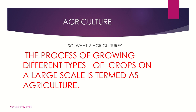So what is agriculture? The process of growing different types of crops on a large scale is termed as agriculture. This basically means that it's not only wheat — it's going to be wheat, barley, maize, and many more types of crops.